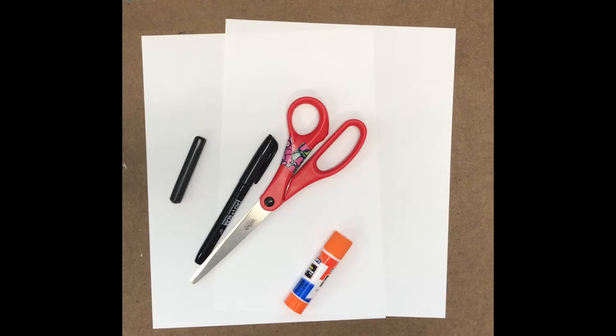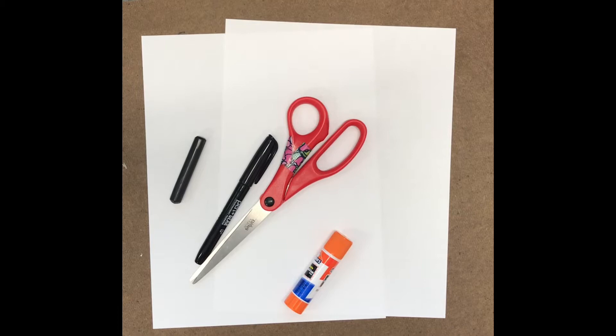For today's activity you're going to need some materials that are a little bit different than we normally use. You're going to need a glue stick, some scissors, a black crayon or marker, and two pieces of paper and any kind of paper is fine.